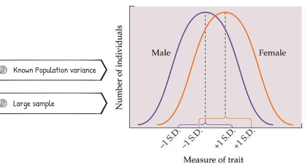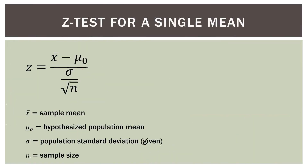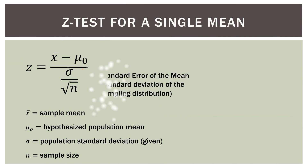The z-test statistic, or z-score, measures how many standard deviations away the sample mean is from the population mean. Here is the formula for calculating a z-score: z equals x minus the population mean, divided by the standard error, which is the standard deviation divided by the square root of the number of observations.